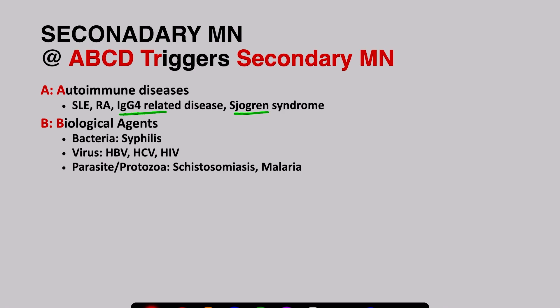B is for biological agents like bacteria, virus, parasite, or protozoa. For example, membranous nephropathy can be seen in cases of syphilis, hepatitis B or hepatitis C infection, HIV infection, and in patients with schistosomiasis and malaria as well.